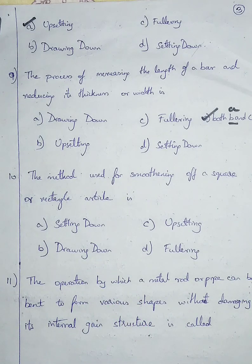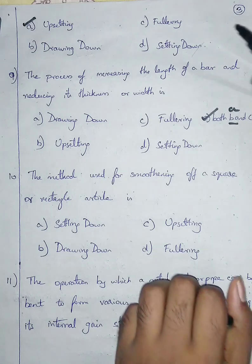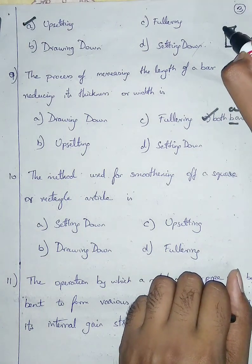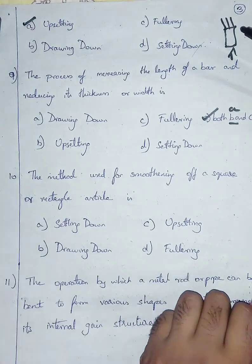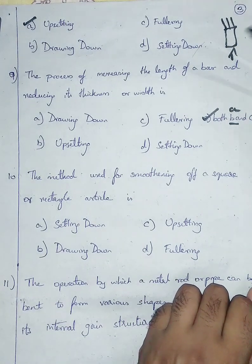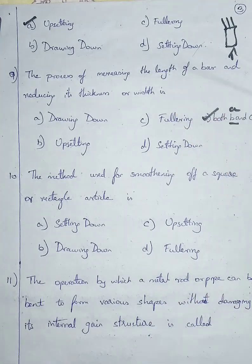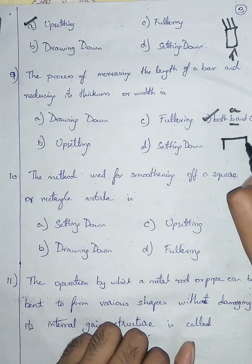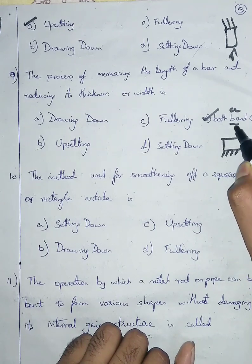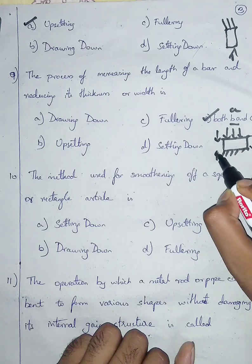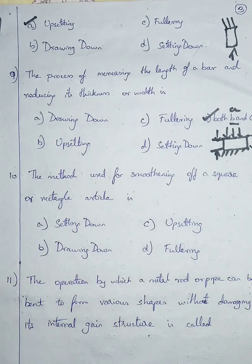Question number ten revisited: if you are increasing the thickness by reducing the length, that is called upsetting — imagine fixing one end of a metal bar and beating it, increasing its thickness by reducing its length. For drawing down, place the bar horizontally and hammer it to increase length while reducing thickness. Drawing down is also called fullering, so the answer is option E, both A and C.